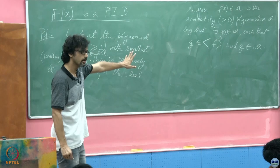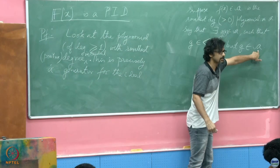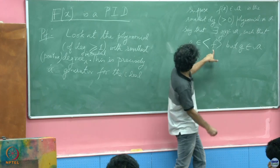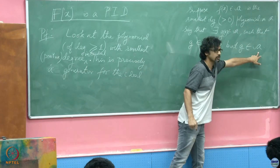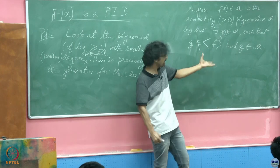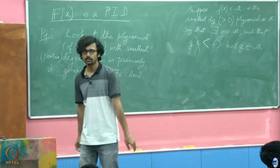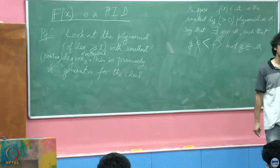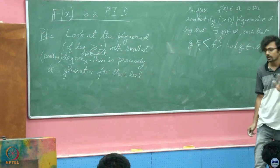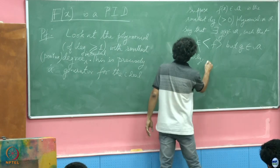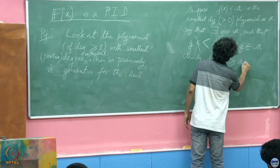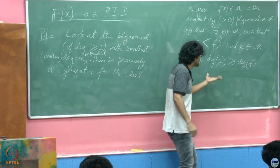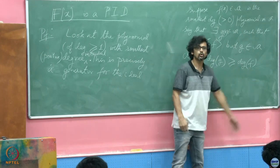Then I would have violated the claim — I have found you some element inside the ideal which cannot be generated by f. I have found a g which belongs to the ideal but it cannot be generated by f. When does something fail to belong to the ideal generated by f? What can you say about the degrees of g and f? By my very choice, f is of the smallest degree, so the degree of g is at least as much as that of f. Therefore, I can go ahead and divide g by f.